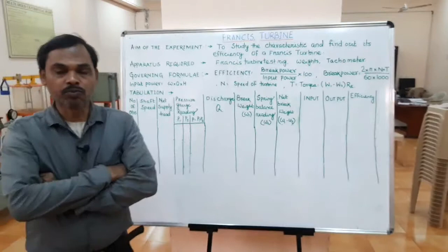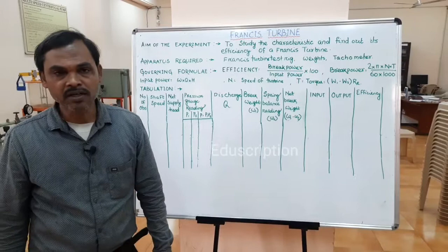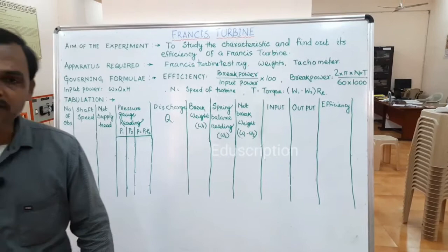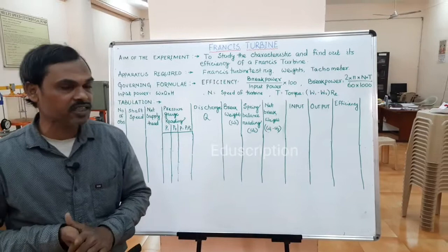Good morning, welcome to this description. The next experiment of the fluid mechanics lab is the Francis turbine. The aim of the experiment is to study the characteristics and find out the efficiency of a Francis turbine. The basic apparatus required are the Francis turbine test rig, some weights, and a measuring device — that is the tachometer.